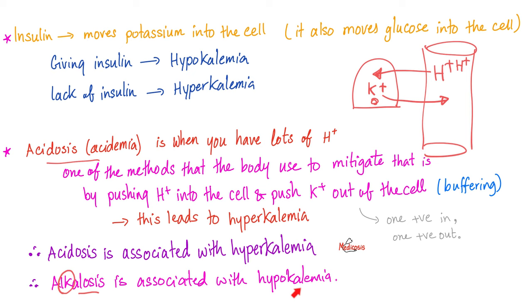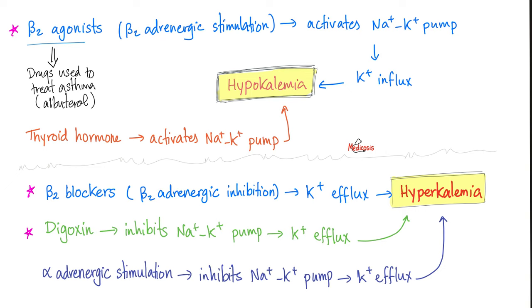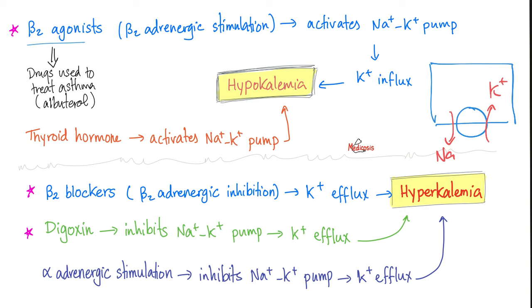Another important point: beta-2 agonists stimulate the sodium-potassium pump. The pump pushes sodium to the outside and potassium to the inside. If I'm taking a beta agonist, I'm stimulating my sodium-potassium ATPase, which pushes more potassium into the cell and leaves less potassium in the blood — i.e., hypokalemia. This can be exploited by using beta-2 agonists to treat hyperkalemia.